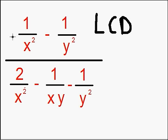So the lowest common denominator of 1 over x squared, 1 over y squared, and so on. We just look at the denominators for each of these. And when we put them all together, we find out that the lowest common denominator is x squared y squared.